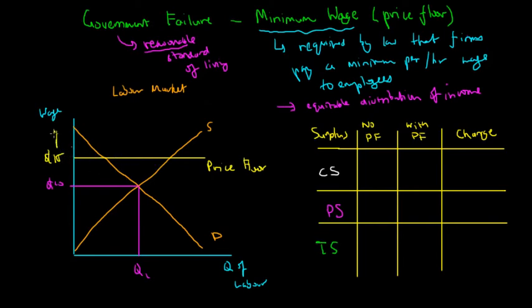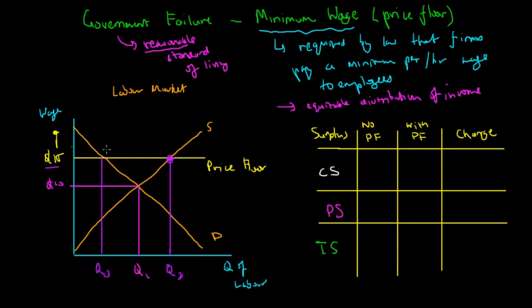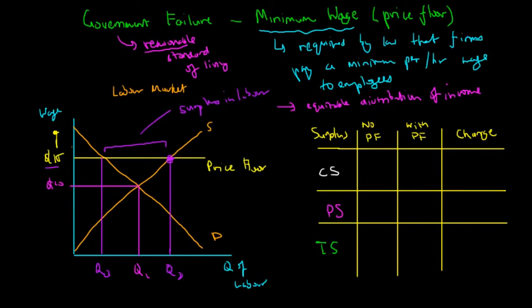With a minimum wage of fifteen dollars, labor costs are fifteen dollars or greater. Because of this price floor, the quantity of labor supplied increases to Q2, as more people are willing to enter the market. However, firms face higher labor costs and will only hire the best workers to minimize costs. The result is a surplus of labor — the gap between Q2 and the quantity demanded — which is also commonly referred to as unemployment.